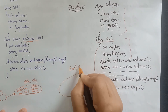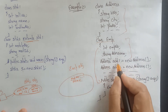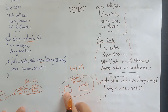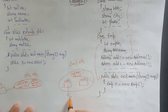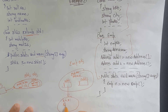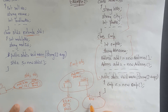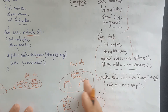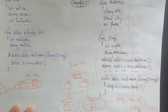Inside the employee object, employee number and name are there. Two Address objects are created with references address1 and address2. Address1 accesses house number, city, and phone number; address2 does the same. You can create any number of Address objects. Each is a complete address object inside the Employee.